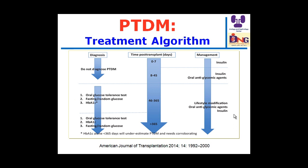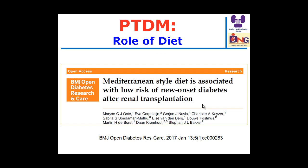Regarding management: when hyperglycemia is diagnosed immediately post-operatively, the best treatment is insulin. Beyond 45 days, post-transplant diabetes is treated as type 2 diabetes with lifestyle modification, oral anti-hyperglycemic agents, and insulin. Treatment is multidisciplinary and should stress healthy diet, lifestyle, exercise, and medical treatment. The Mediterranean diet is metabolically favorable and recommended.